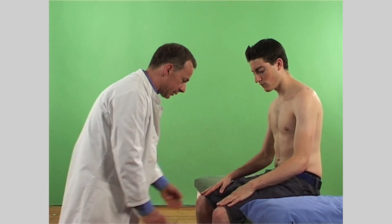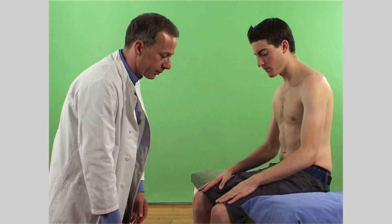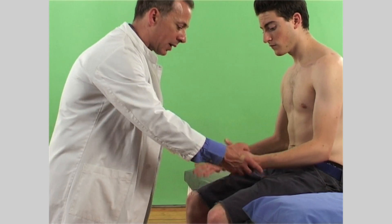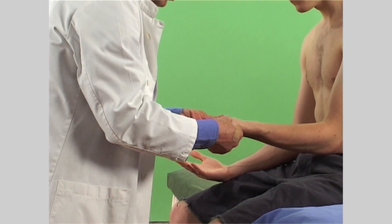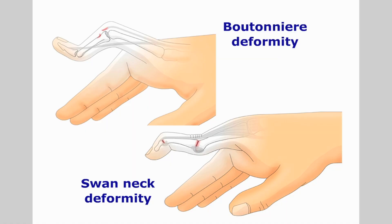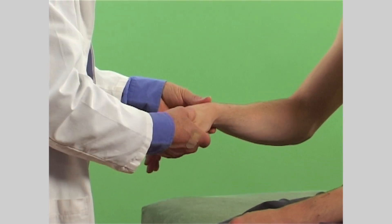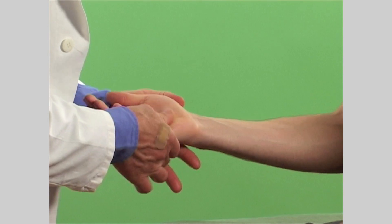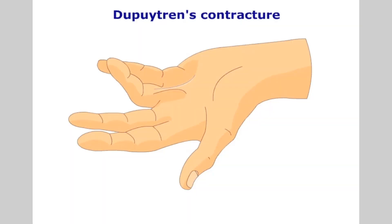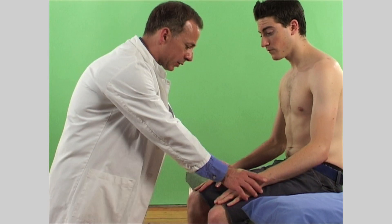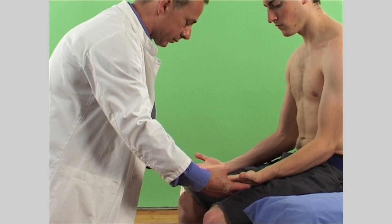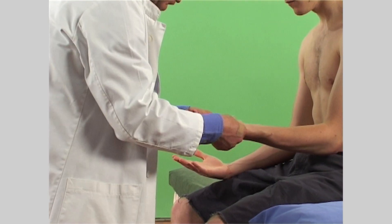Let us begin the examination of the hand with general observation, noting the bony and soft tissue contours. Check for any congenital or developmental factors, deformities like swan neck and boutonniere. Note any contractures such as Dupuytren's or Volkmann's ischemic contracture. Observe the general hand and finger posturing and any radial or ulnar deviations of the digits, the carpals or the wrist.